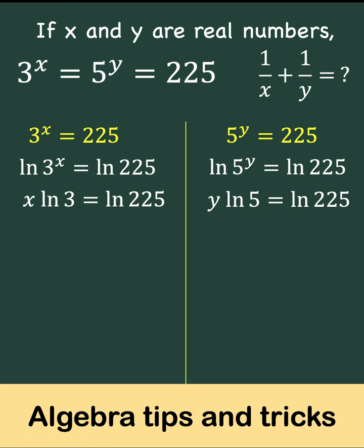Now let's solve the left equation for x to arrive at x equals ln of 225 over ln of 3. Then at the right, we have y equals ln of 225 over ln of 5.